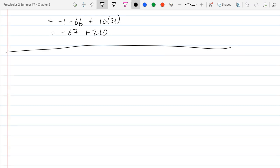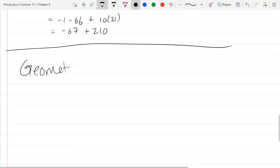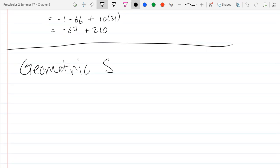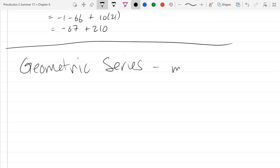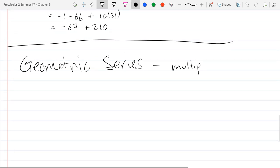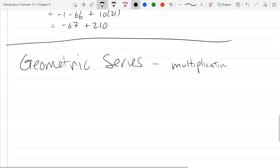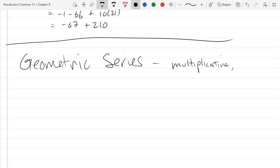This next series is called geometric series and it's the sum of a multiplicative pattern. It's also going to be different than our other ones - it's going to be infinite.